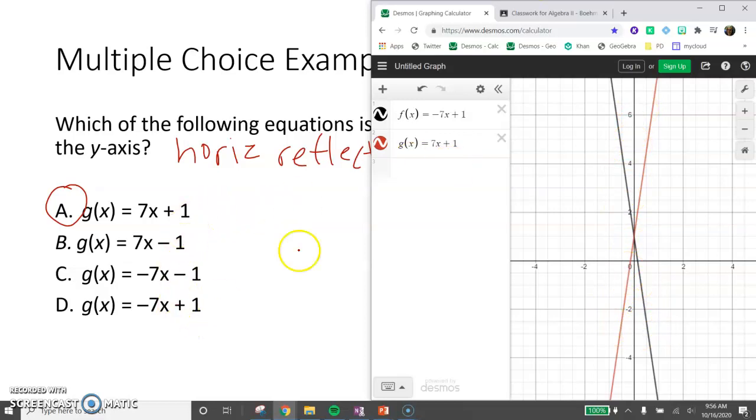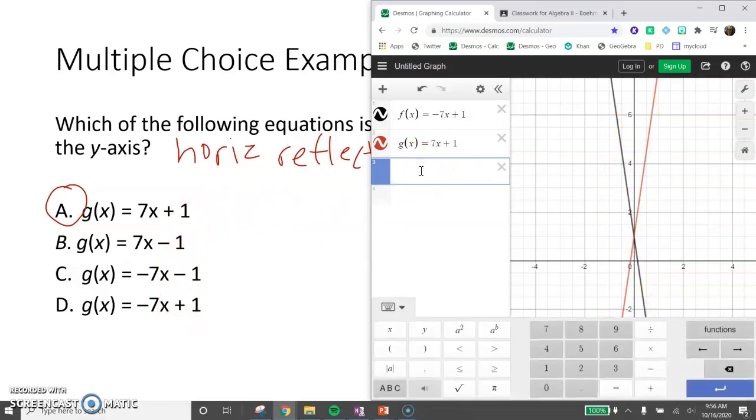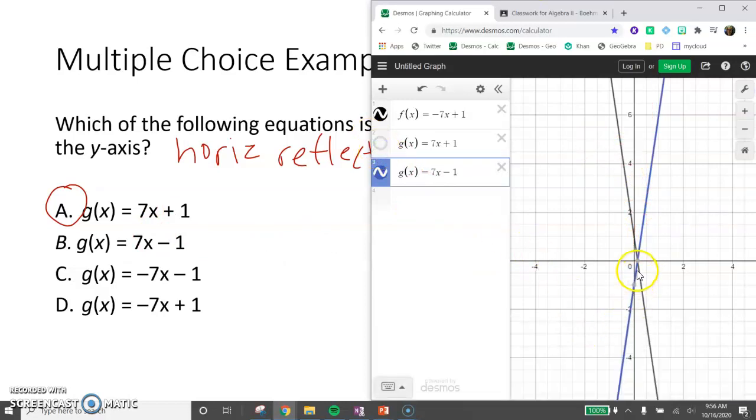You could always double check all of the other ones. So if we were to try g of x equals 7x minus 1, and I were to hide my red one, well, that's kind of a reflection, but it's not about the y-axis. It's about some line in between here. So that doesn't work.